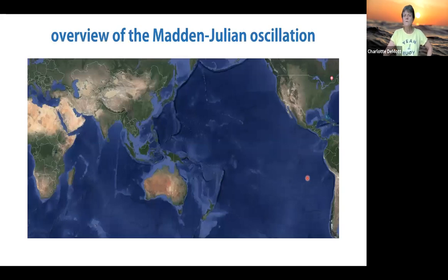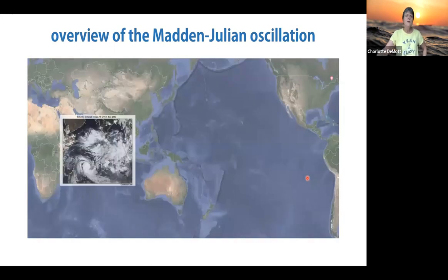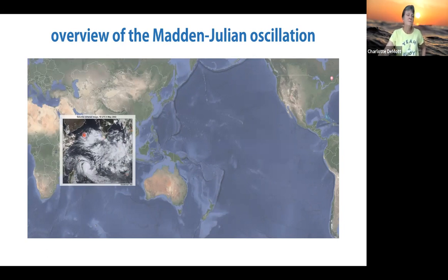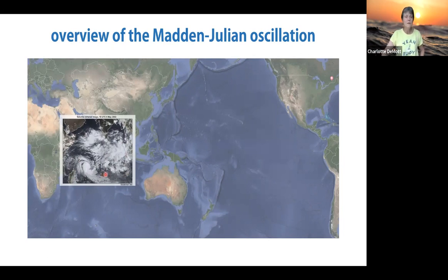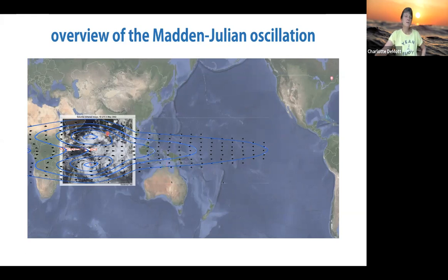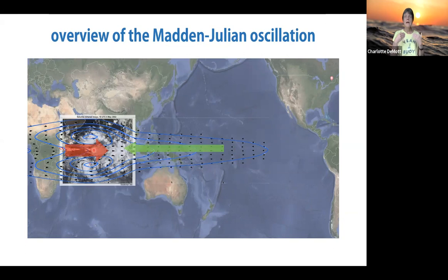For a brief MJO overview: overlaid on this map is a satellite image of convection associated with a given MJO event—a huge heating anomaly spanning almost the entire Indian Ocean basin. The blue lines show sea level pressure perturbations driven by this large-scale heating. The Kelvin wave component stretches far into the Pacific Ocean, while the Rossby gyres are located in the Indian Ocean. To the east of MJO convection you have low-level easterly winds, and to the west stronger low-level westerly winds associated with westerly wind bursts that strongly impact the upper ocean.